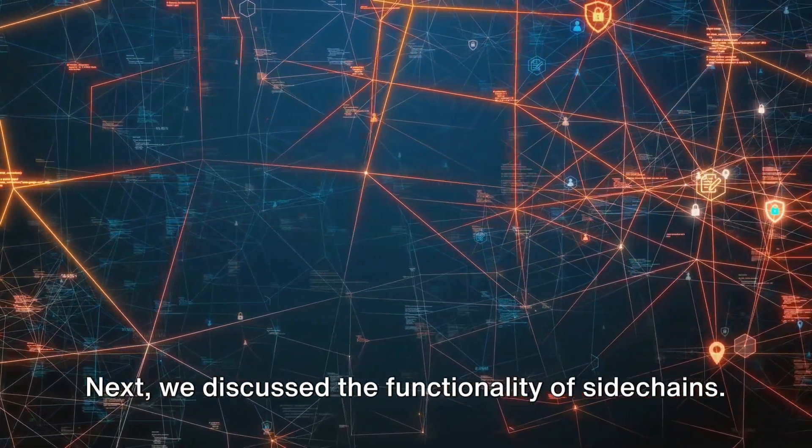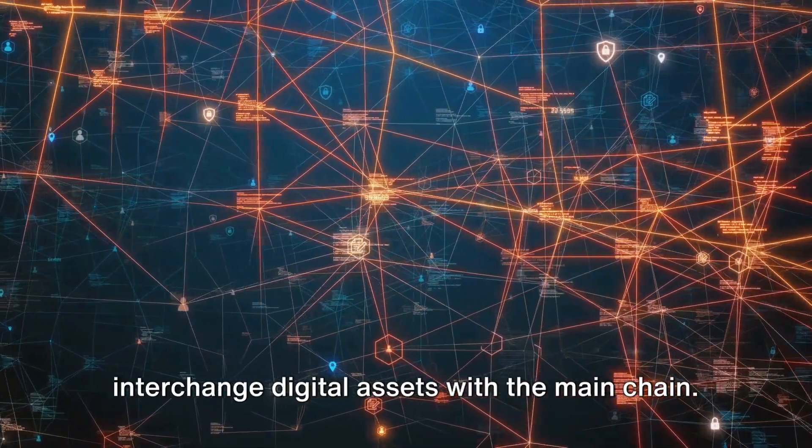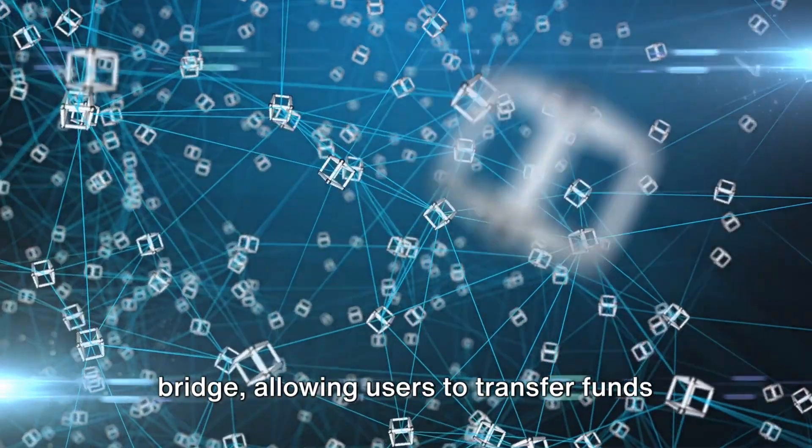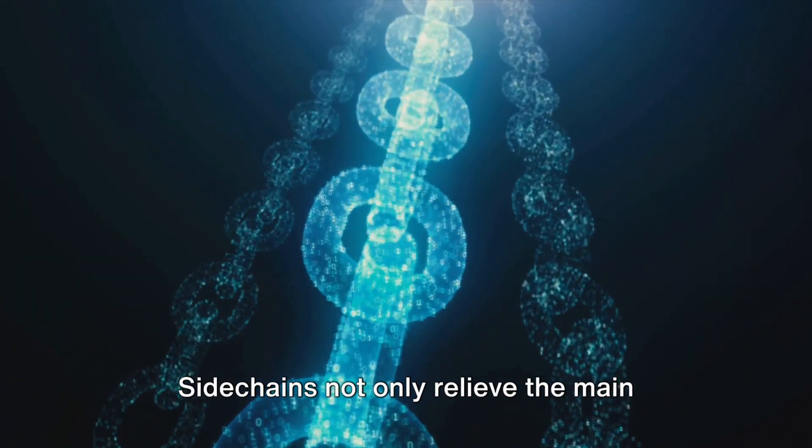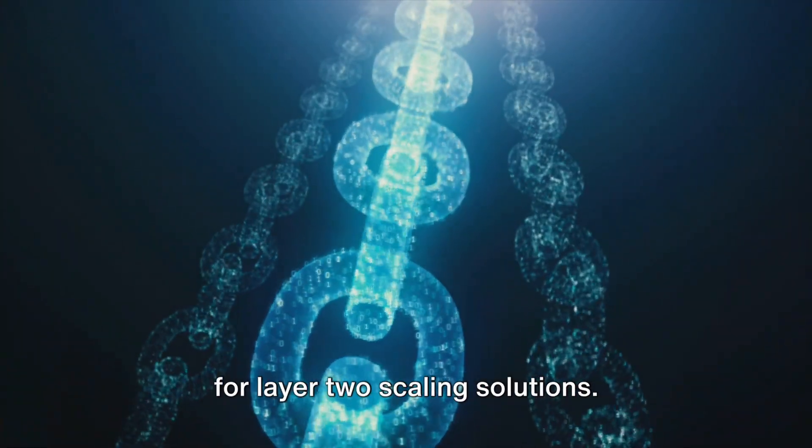Next, we discussed the functionality of sidechains. They act as parallel blockchains that can interchange digital assets with the main chain. This is achieved through a two-way bridge allowing users to transfer funds to a sidechain and back. Sidechains not only relieve the main chain of traffic but also offer potential for layer 2 scaling solutions.